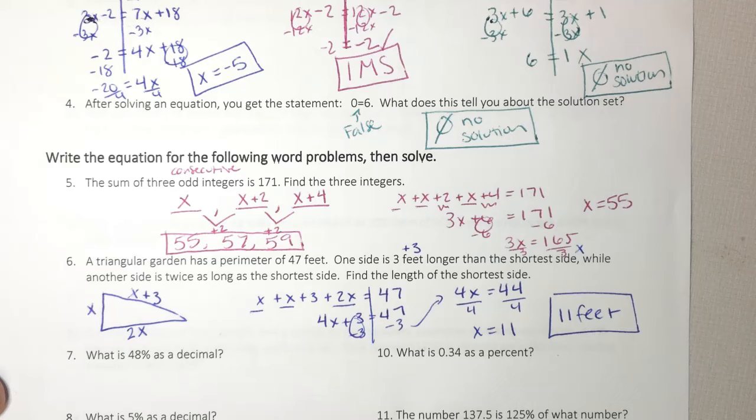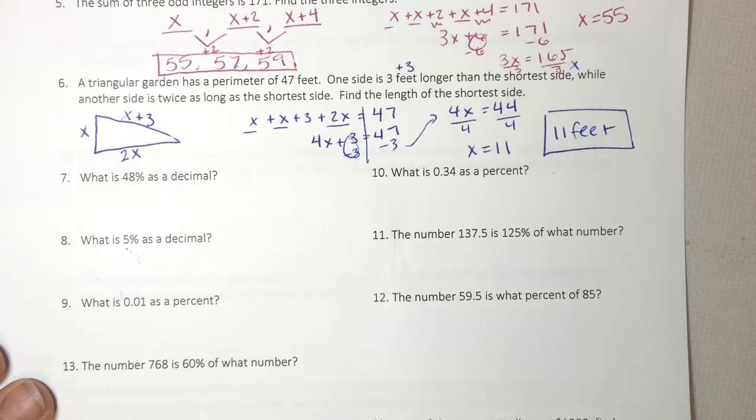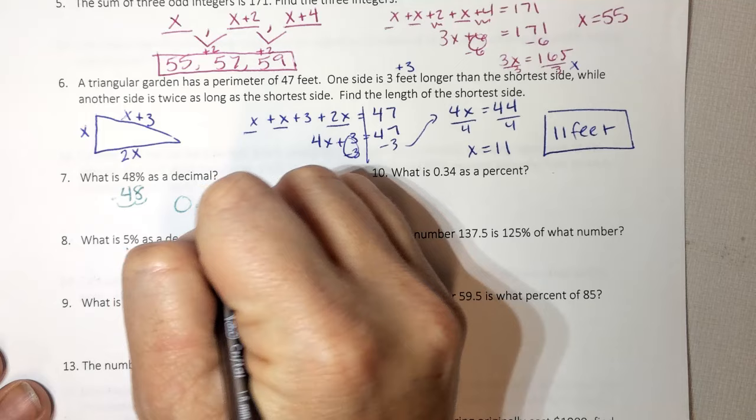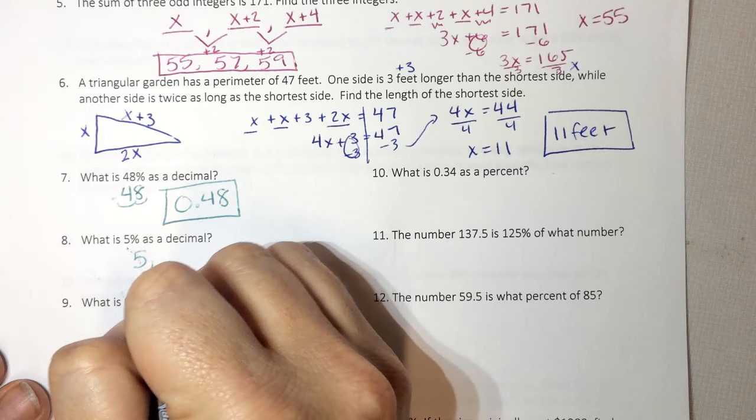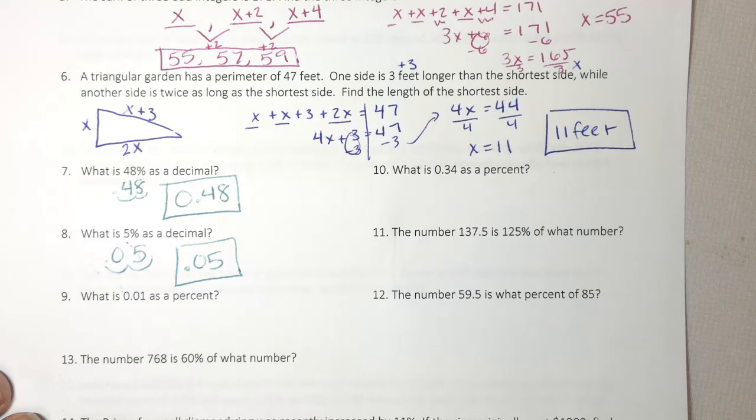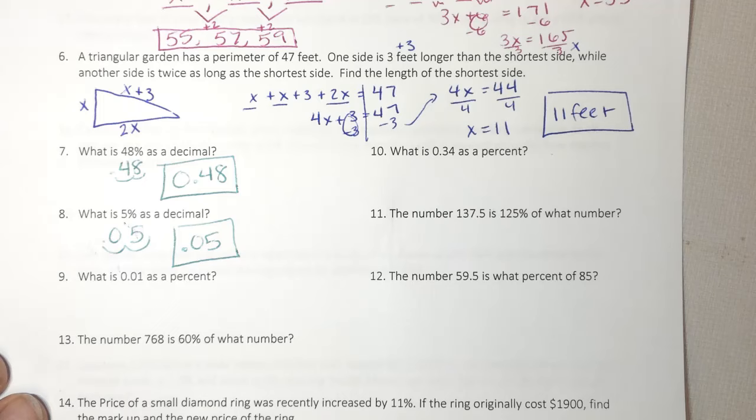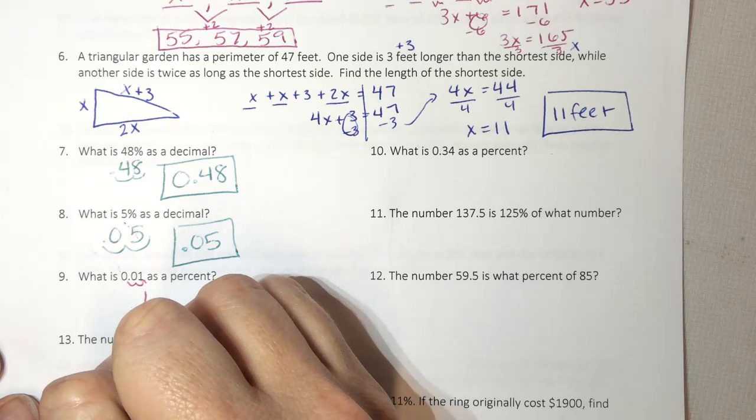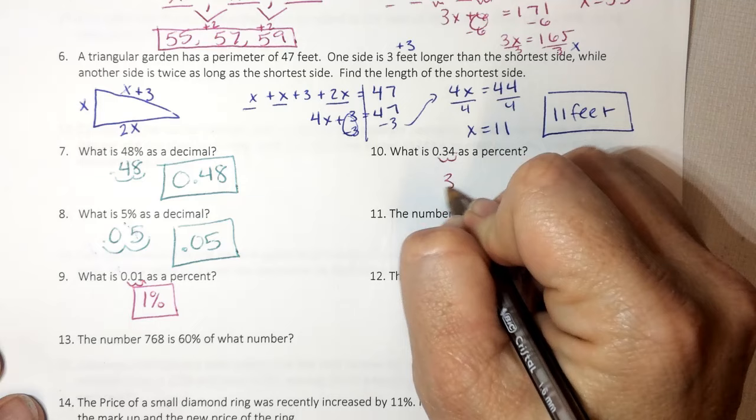Here says what is 48% as a decimal? Well, 48, we move the decimal twice to the left and it becomes 0.48. 5% as a decimal. Move it twice to the left and it becomes 0.05. What is 0.01 as a percent? I'm going to move it to the right twice and I get 1%. Move it to the right twice and I get 34%.